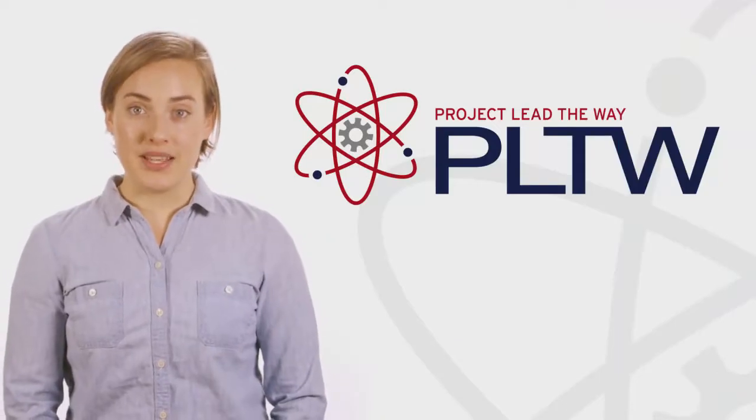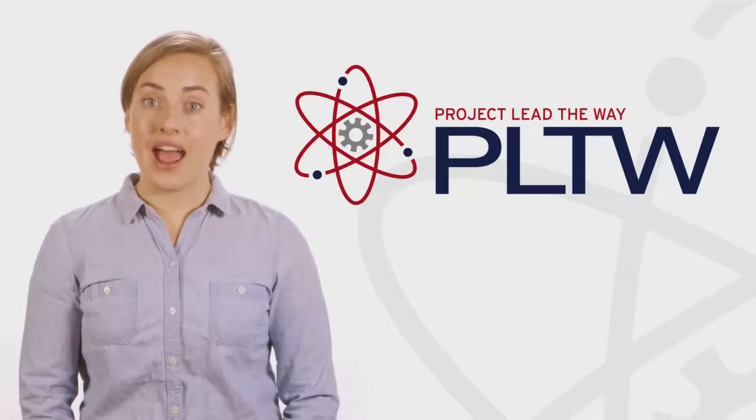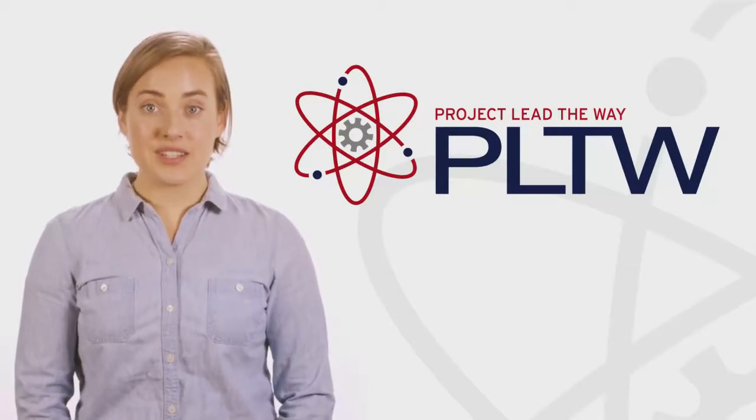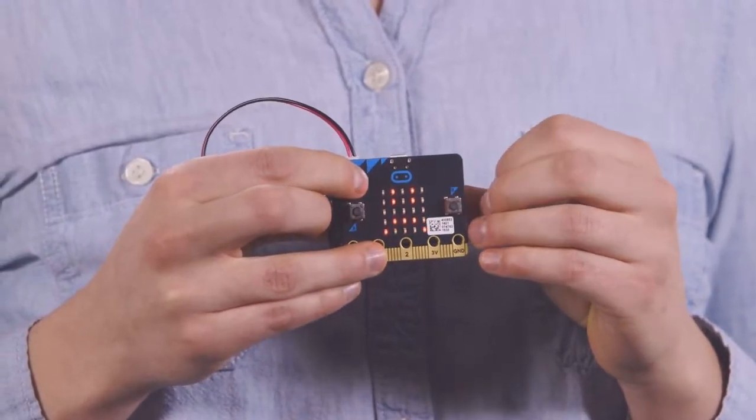The micro:bit has input components built onto the microcontroller which you can use to trigger events or actions in your programs. For example, you can press button A or B to show different faces on the LED grid.